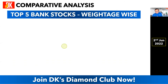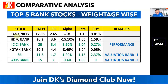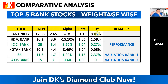We discussed the top five bank stocks as constituents of Bank Nifty in terms of index weightage. Now let us do a comparative analysis. Bank Nifty has a P/E ratio on a TTM basis of 17.86 and a P/B of 2.65. The alpha of Bank Nifty has been minus 6% compared to Nifty 50, and the beta is 1.1 — slightly more volatile than Nifty 50. The current dividend yield is 0.81% at the index level.